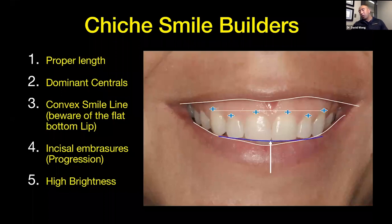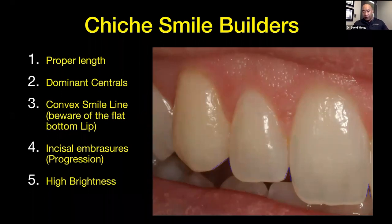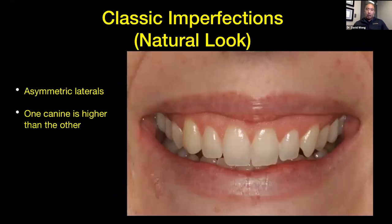As far as the incisal embrasures, the embrasure between the two centrals is the smallest and the contact point is more in the incisal third. As we go to the embrasure between the central and the lateral, it's a little bit wider; between the lateral and the canine, even wider; and between the canine and the first premolar, even wider still. Embrasures get bigger as we move distally. Contact points start more in the incisal third, then they start to move more apically as you go posterior.